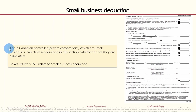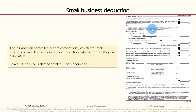Section 5 is Small Business Deduction. Canadian Controlled Private Corporations (CCPCs) that are small businesses can claim a deduction in this section, whether or not they are associated. Boxes 400 to 515 relate to small business deduction. The $500,000 business limit is mentioned here. If you're using software, most of this information will populate automatically — in a future video I'll show preparing the form hands-on.